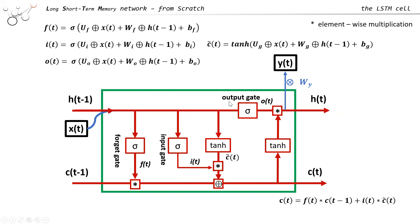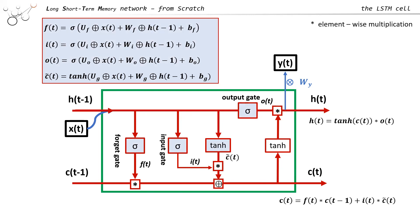We want to learn what the output will be, so the output gate has learnables. Finally, the output gate result is multiplied element-wise with Ct, with tanh in between for compactification — that tanh part is not learnable. The equations containing learnables are highlighted in blue, whereas the tanh just rescales values without learnable parameters.